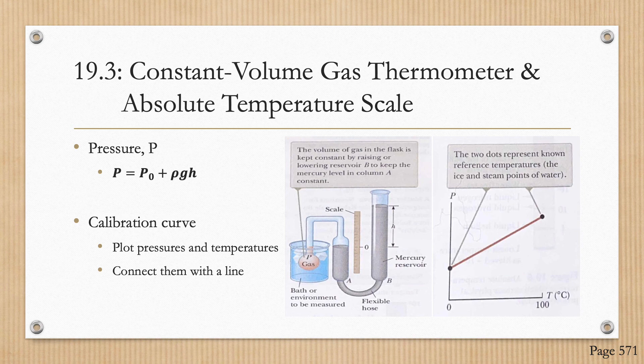The flask is then immersed in water at the steam point, or 100 degrees Celsius, and the mercury reservoir is readjusted until the top of column A is again at zero on the scale. This ensures the gas volume remains the same as in the ice bath, hence the designation constant volume. With the two pressure and temperature values, we plot them as points on a graph as shown in the graphic. Connecting the two points serves as a calibration curve for unknown temperatures.